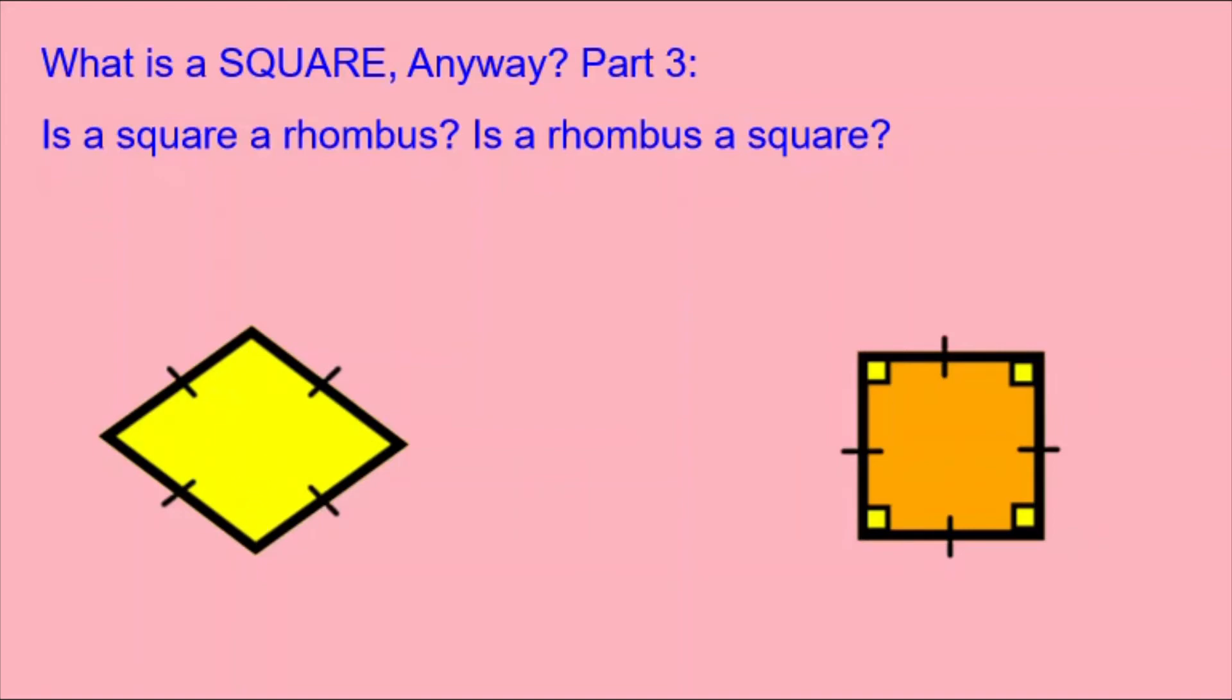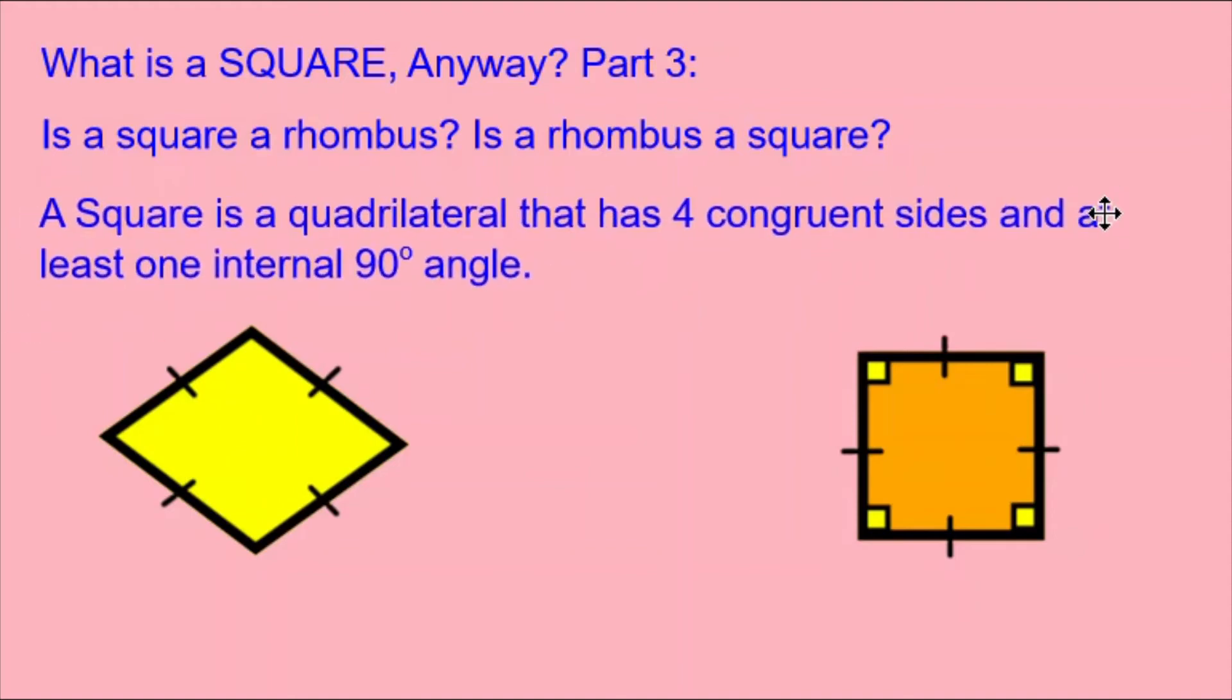Let's look at the definition of a square. A square is a quadrilateral that has four congruent sides and at least one internal 90 degree angle. So we can see that this orange square is following those rules.